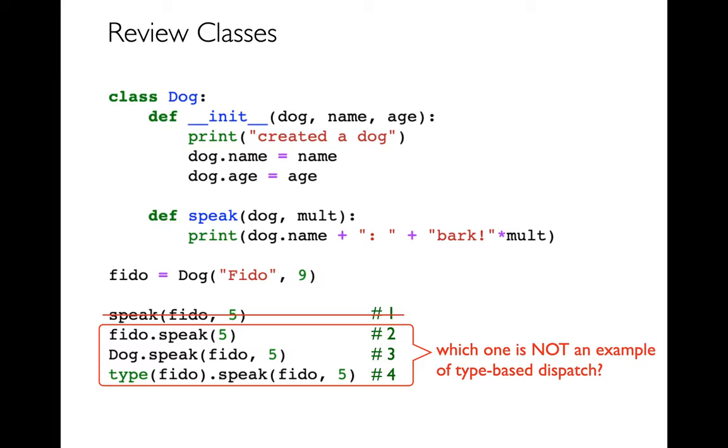So what this means is imagine that I have other classes, right? So I have dog, cat, I don't know, gorilla, whatever. And let's say I don't know what Fido refers to. Is Fido referring to a cat or a dog? Type-based dispatch means that when I am calling my method, the method that actually gets called depends on the type of Fido, right? If Fido is a cat, then cat.speak gets called. If Fido is a dog, dog.speak gets called.